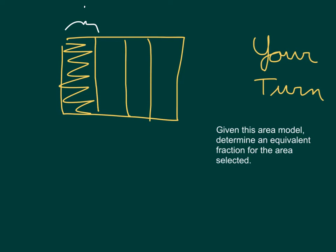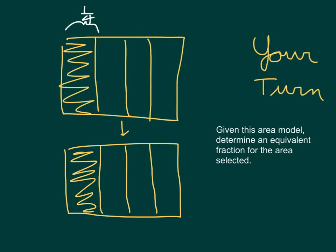Did you label the original area model as one-fourth? How many horizontal lines did you draw? Some of you might have only drawn one. To go ahead and go from one-fourth, then, and the multiplication sentence would look like this here. To be able to get that one-fourth equals two-eighths.